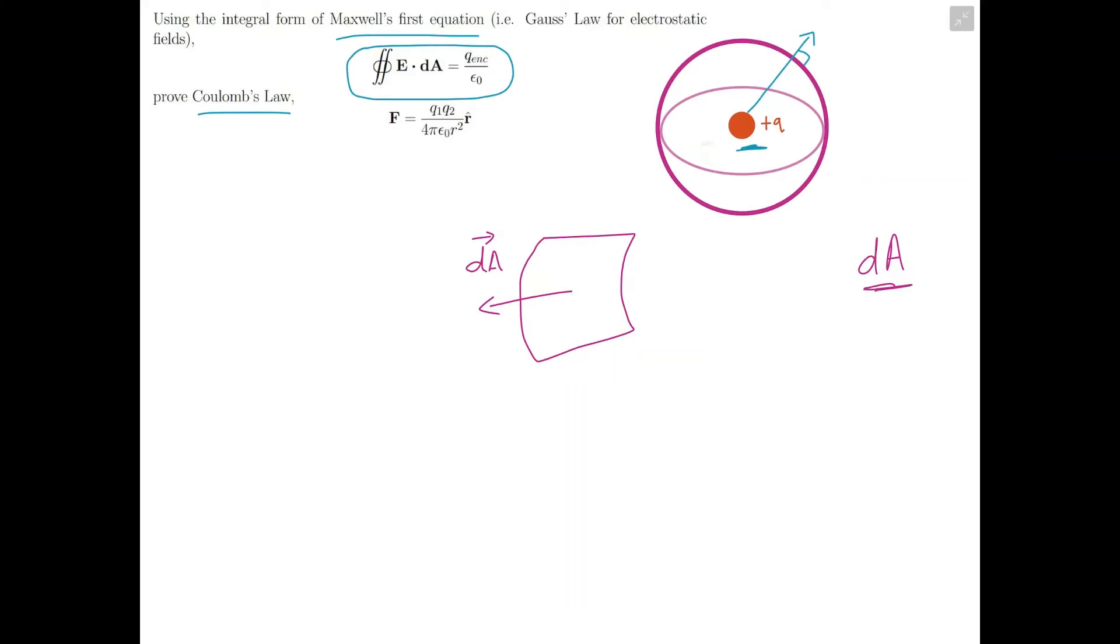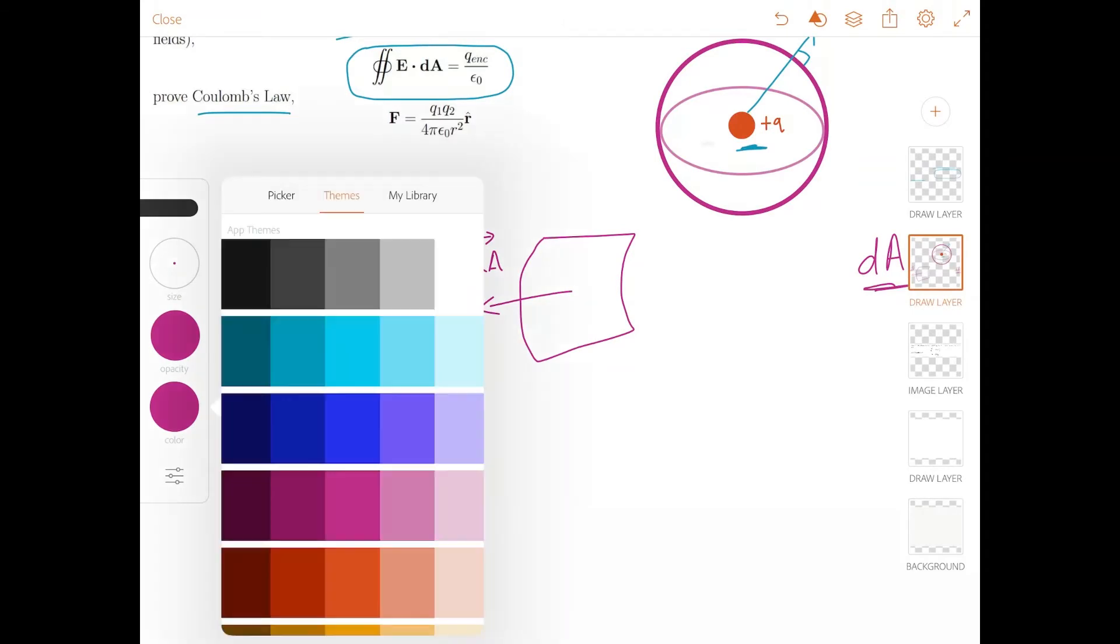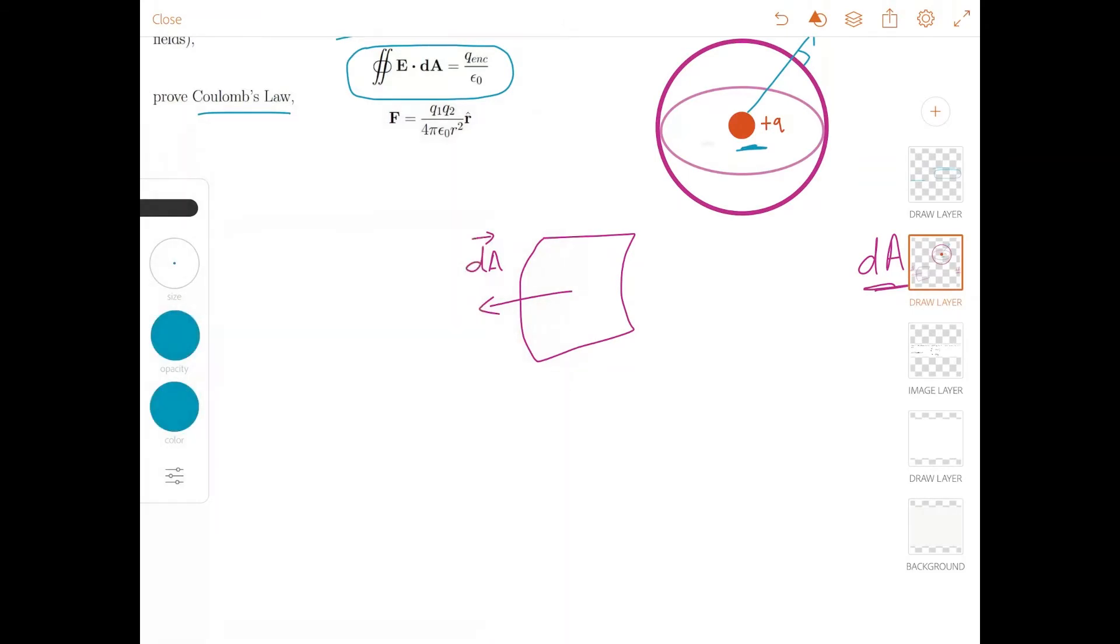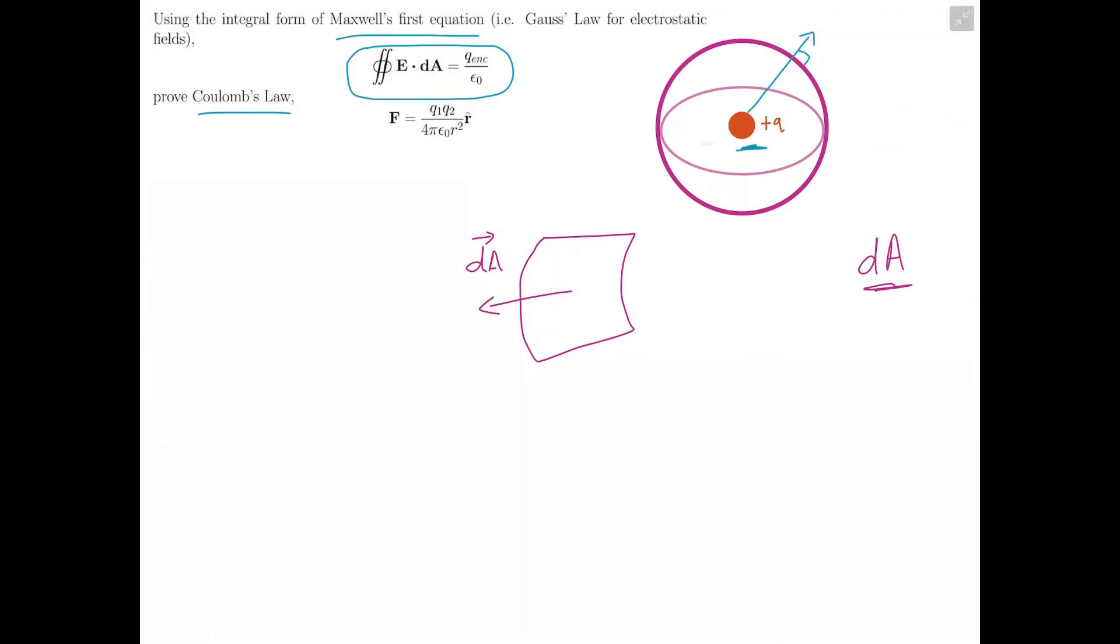Even though this piece would be curved, if you take a really tiny piece of it, it would be flat. So now if we compare this dA with the electric field vector E we are taking the dot product of, E and dA would actually lie on top of each other. This vector E would be parallel to dA.